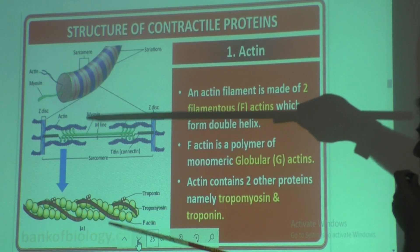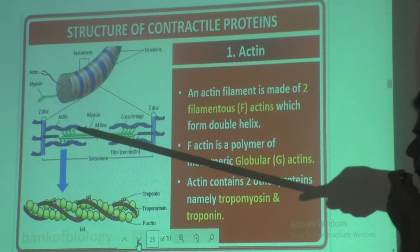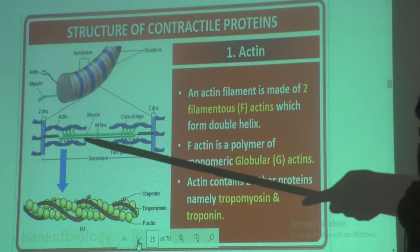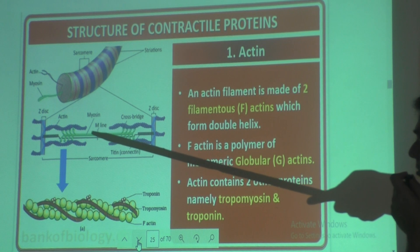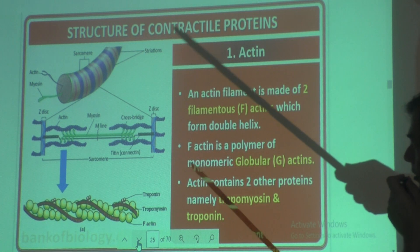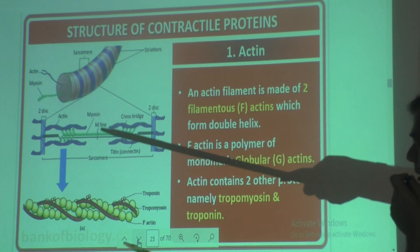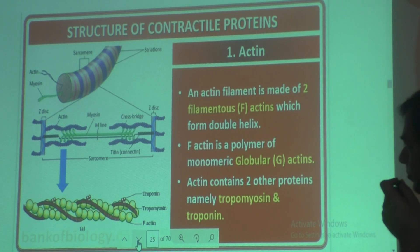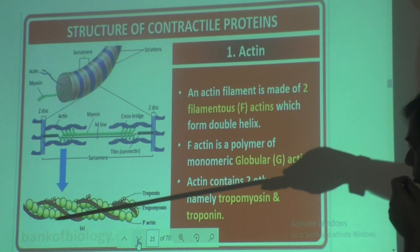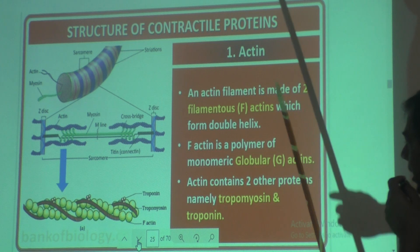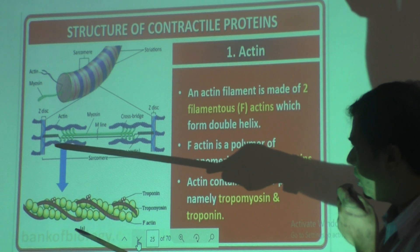They are showing how actin and myosin will be arranged. The blue color part is actin, and the green color part is myosin. In between the green color myosin, you can see the M line. So this is the structure — the same thing they are showing here. If you see actin, that is the blue color part — this is an enlarged view of actin.